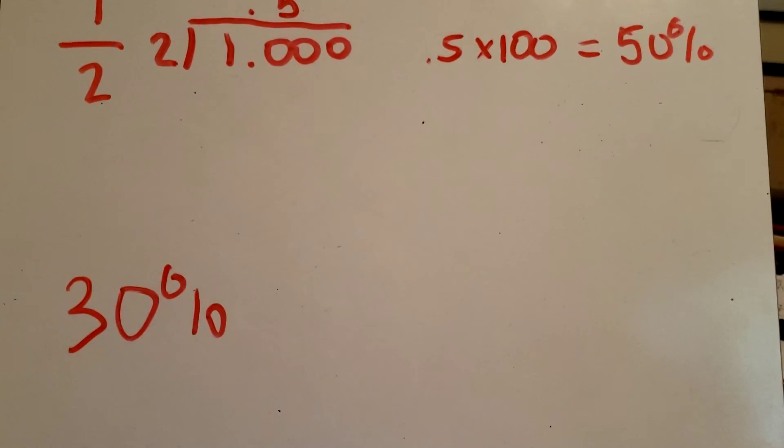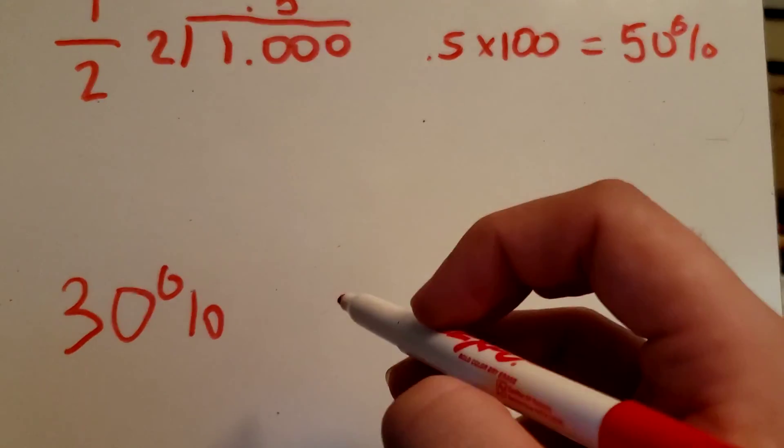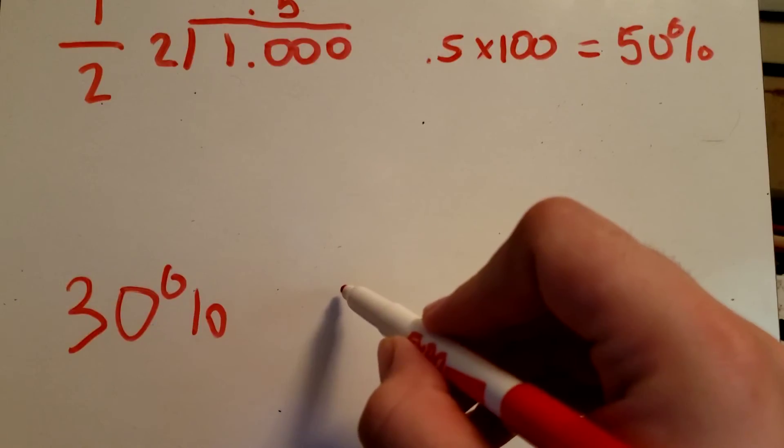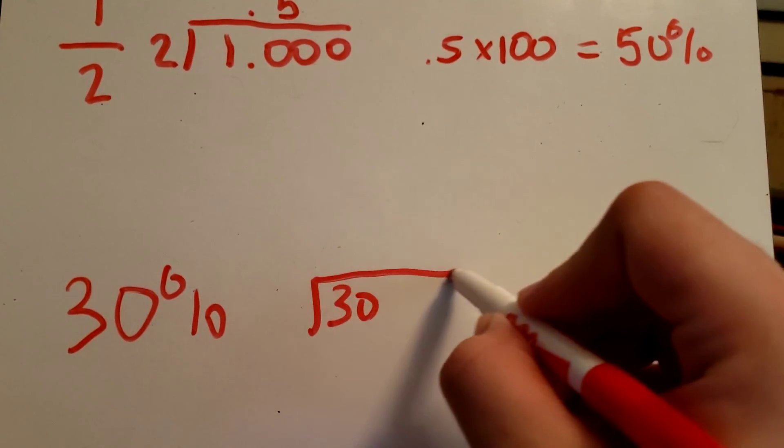So 30 percent needs to be turned into a decimal. To turn a decimal into a percent, we multiplied by a hundred. So to make it not a percent anymore, to turn it back into a decimal, we're going to divide.